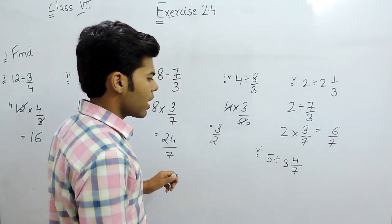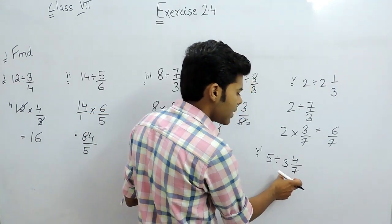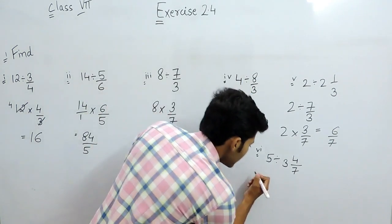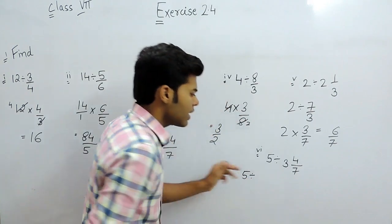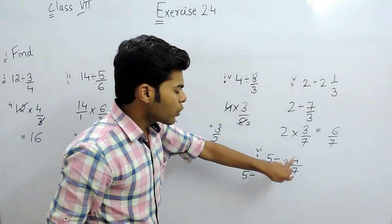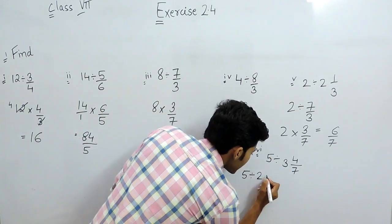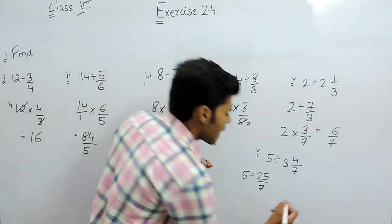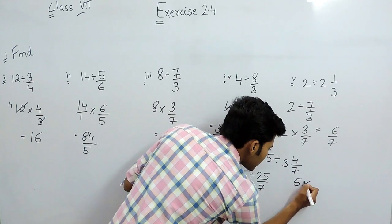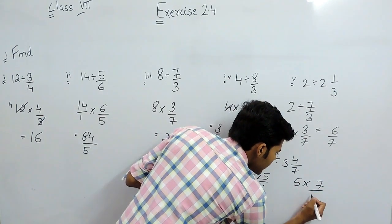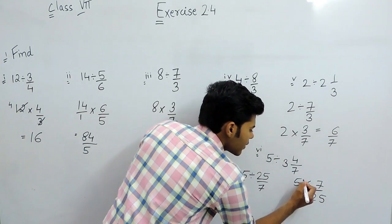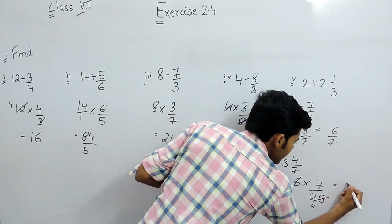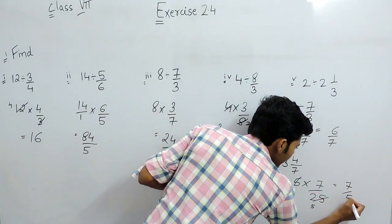Similarly in the last part, first of all we will convert this mixed fraction into improper fraction that will be 5 divided by, 7 times 3 is 21, 21 plus 4 is 25 by 7. And now we can write this as 5 multiplied with 7 divided by 25, which simplifies, and our answer will be 7 by 5.